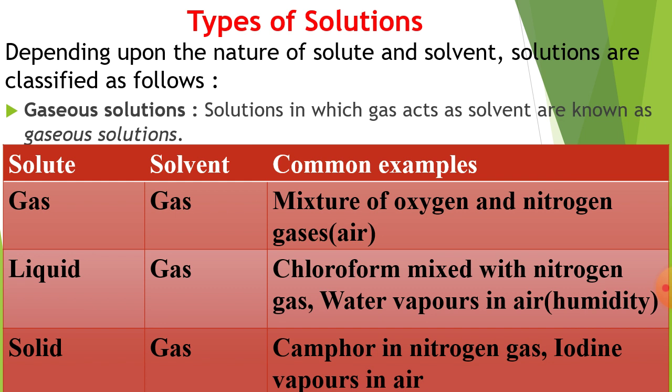Now, types of solution. Basically, on the basis of solvent, there are three types: liquid solution, solid solution, and gaseous solution. But on the nature of solute, they are of nine types. Depending upon the nature of solute and solvent, solutions are classified as follows. First, gaseous solution — the solution in which gas acts as solvent, or gas is present in larger amount, so the solution looks like gas. Some examples are given in the table below.